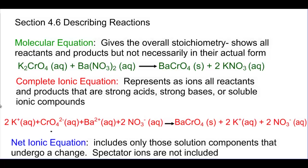There are three equations you need to know. The first one is the molecular equation, which is what we have always been writing. It represents all species as molecules, even if that's not how they really exist. So the molecular equation gives the overall stoichiometry — it shows all your reactants and products combined, even if they're soluble. This equation between potassium chromate and barium nitrate would be the complete molecular equation.